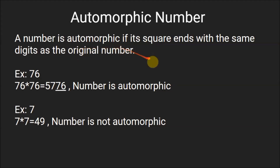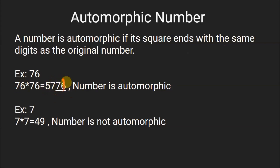A number is automorphic if its square ends with the same digits as its original number. For example, if the number is 76 then its square will be 76 x 76, which comes out to be 5776. The last two digits of 5776 are 7 and 6, which is equal to the original number. So this is an automorphic number.